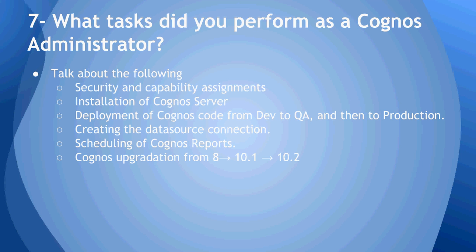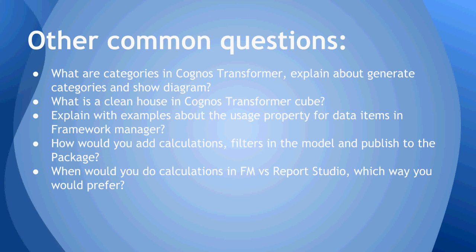Some other common frequently asked questions: what are categories in Cognos Transformer, and explain about Generate Categories and Show Diagram. Categories are basically the elements of the dimension you are creating — dimensions on the levels you are creating in Transformer. Generate Category would generate a tree-like structure on the elements of dimension levels. Show Diagram is an area where you can view the values of each level in a hierarchical fashion.